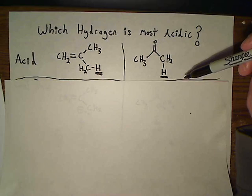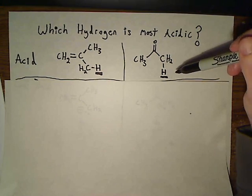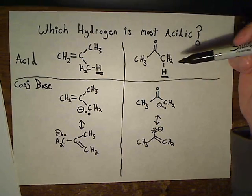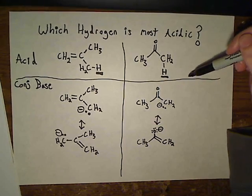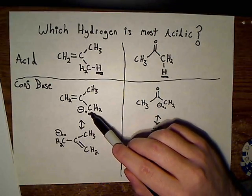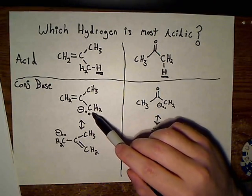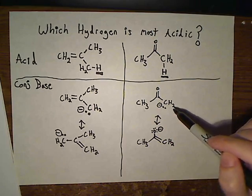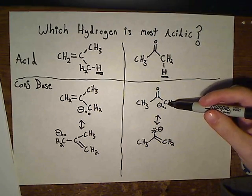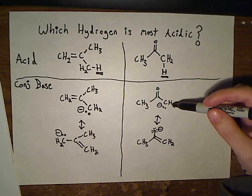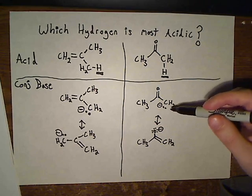You begin these problems by drawing the conjugate base of both molecules you're examining. You imagine that a base comes in and takes away the hydrogen, and that leaves the atom with a negative charge and a lone pair. You see that you're left with a carbon with a formal charge of negative one, because it's now surrounded by five electrons.